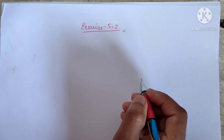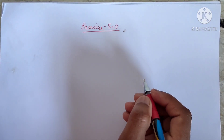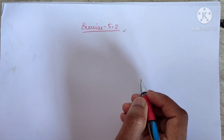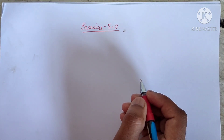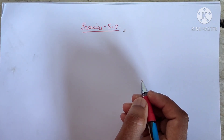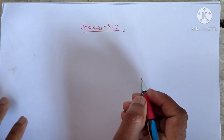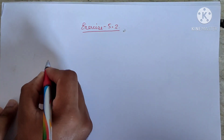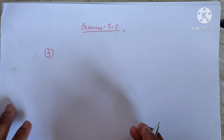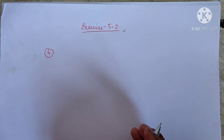Good morning students. Today we'll be continuing the exercise which we left last time. Last time we finished till Roman number three, exercise 5.2. So today we'll start with Roman number four.